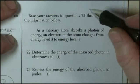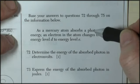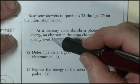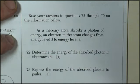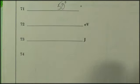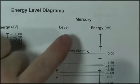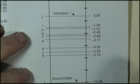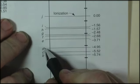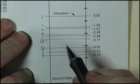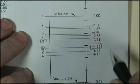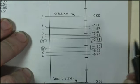Question 72 through 75, based on this information. A mercury atom absorbs a photon of energy. An electron in the atom changes from energy level D to energy level E. Energy levels? Oh, wait a minute. I bet you I've got a chart of energy levels somewhere. Yep, there it is. Energy level diagrams, and they have mercury. Also have hydrogen, but we're using mercury. And let's see, it went from energy level D to energy level E. So it went from 4.95 EVs to 3.71 EVs.